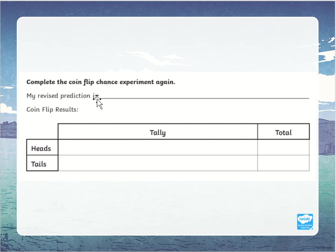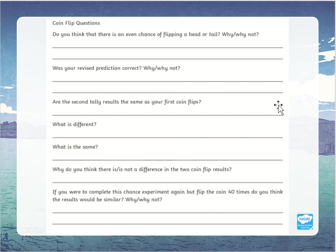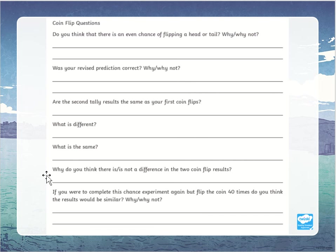Then you're going to do it again — redo your prediction, do it again, put in your tally and total. Then answer these questions: Do you think there is an even chance of flipping a head or tail, why or why not? Was your revised prediction correct, why or why not? Are the second tally results the same as your first coin flips? What was different, what was the same, and why do you think there is or is not a difference in the two coin flip results?